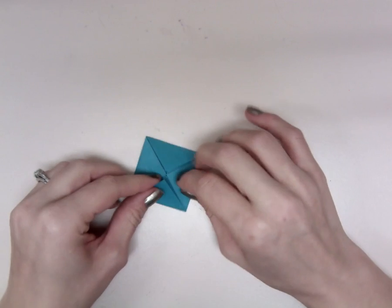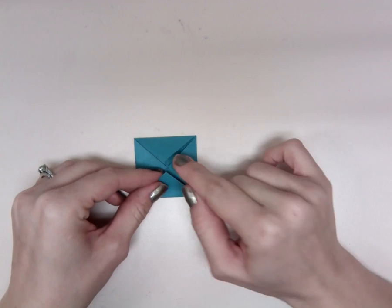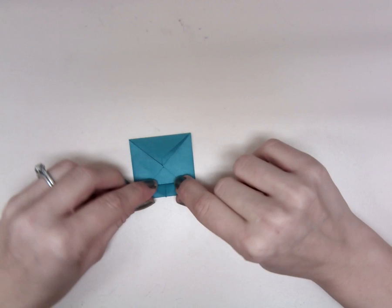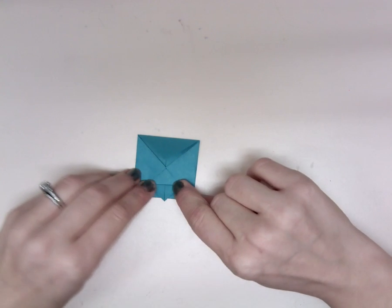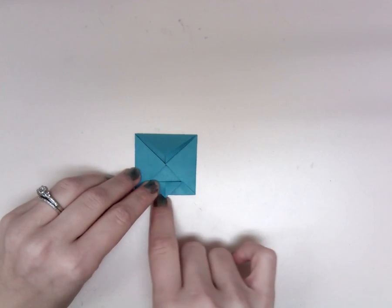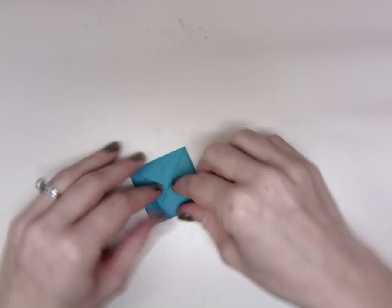Then the last step is to take the pieces you just folded in, and you're going to fold them out just a little. So you bend them out so they kind of meet up with the edge of the outside piece of paper.